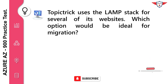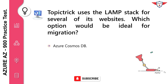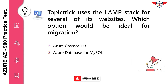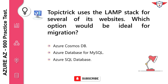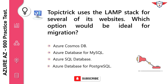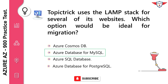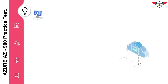Topic Trick uses the LAMP stack for several of its websites. Which option would be ideal for migration? Azure Cosmos DB. Azure Database for MySQL. Azure SQL Database. Azure Database for PostgreSQL. The correct answer is Azure Database for MySQL. Azure Database for MySQL is the logical choice for existing LAMP stack applications.